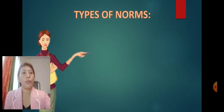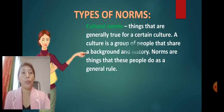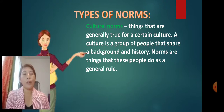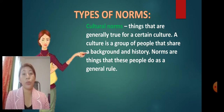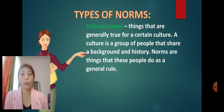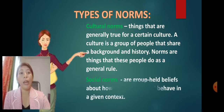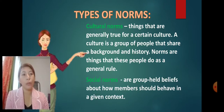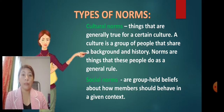These are the types of norms. We have cultural norms, which are behaviors that are generally true to a certain culture — a group of people that share the same background and history, and the norms are the rules these people follow as a general rule. We also have social norms, which are group-held beliefs about how members should behave in a given context or situation.